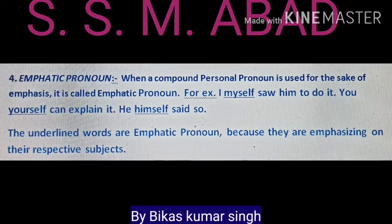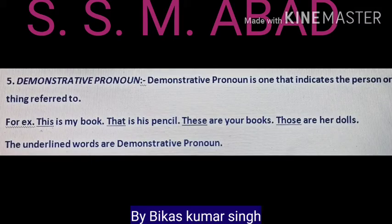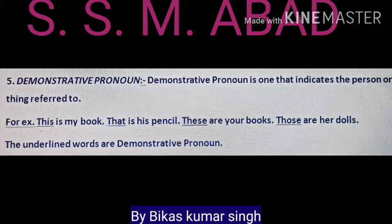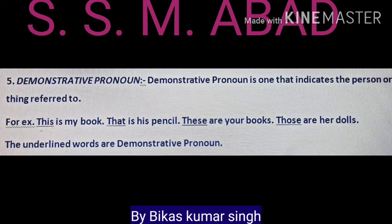After that, we shall go for the fifth pronoun, which is demonstrative pronoun. Demonstrative pronoun is one that indicates the person or thing referred to. For example: this is my book; that is his pencil; these are your books; those are her dolls. In these sentences, this, that, these, and those are indicating book, pencil, books, and dolls respectively. Therefore, they are demonstrative pronouns.